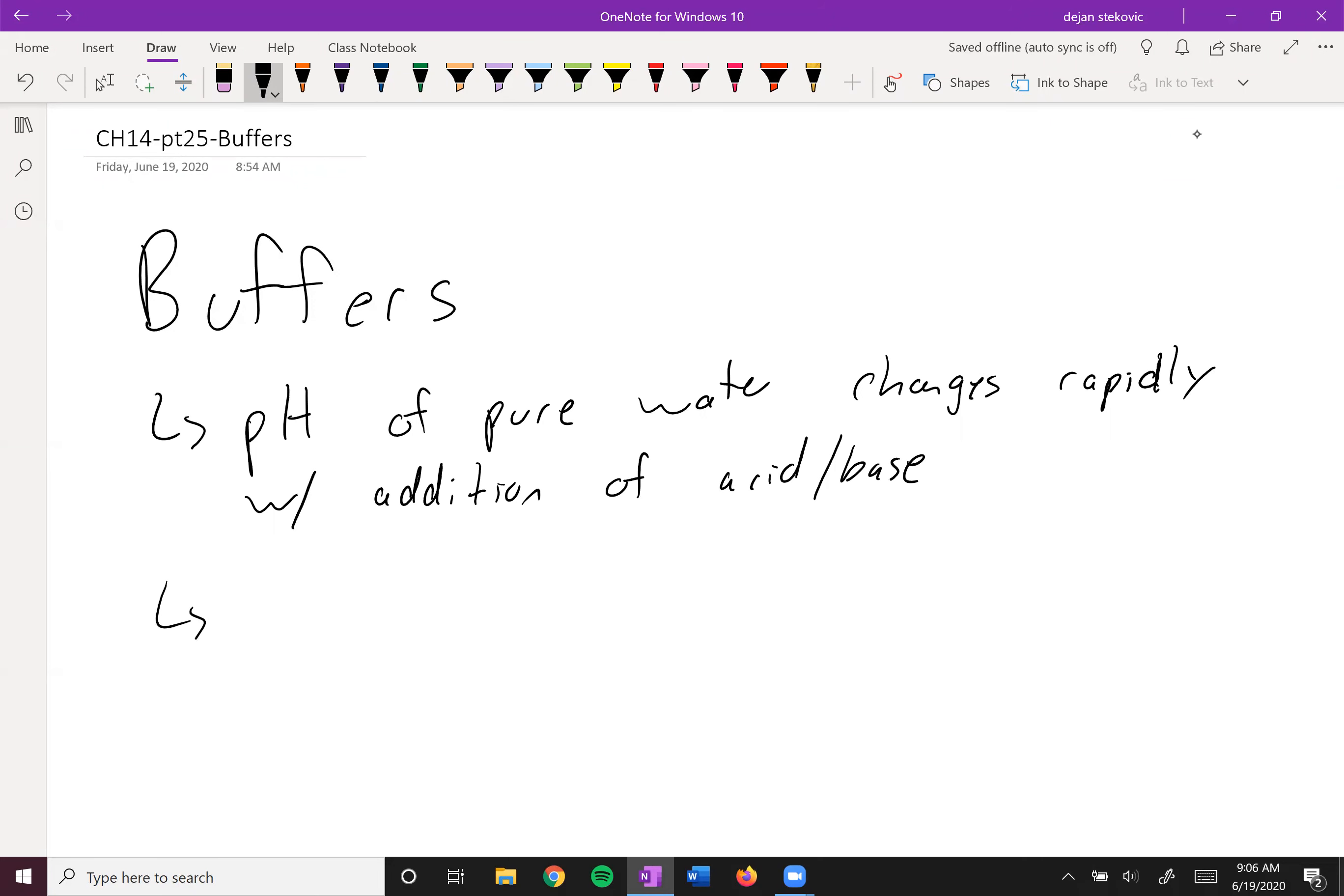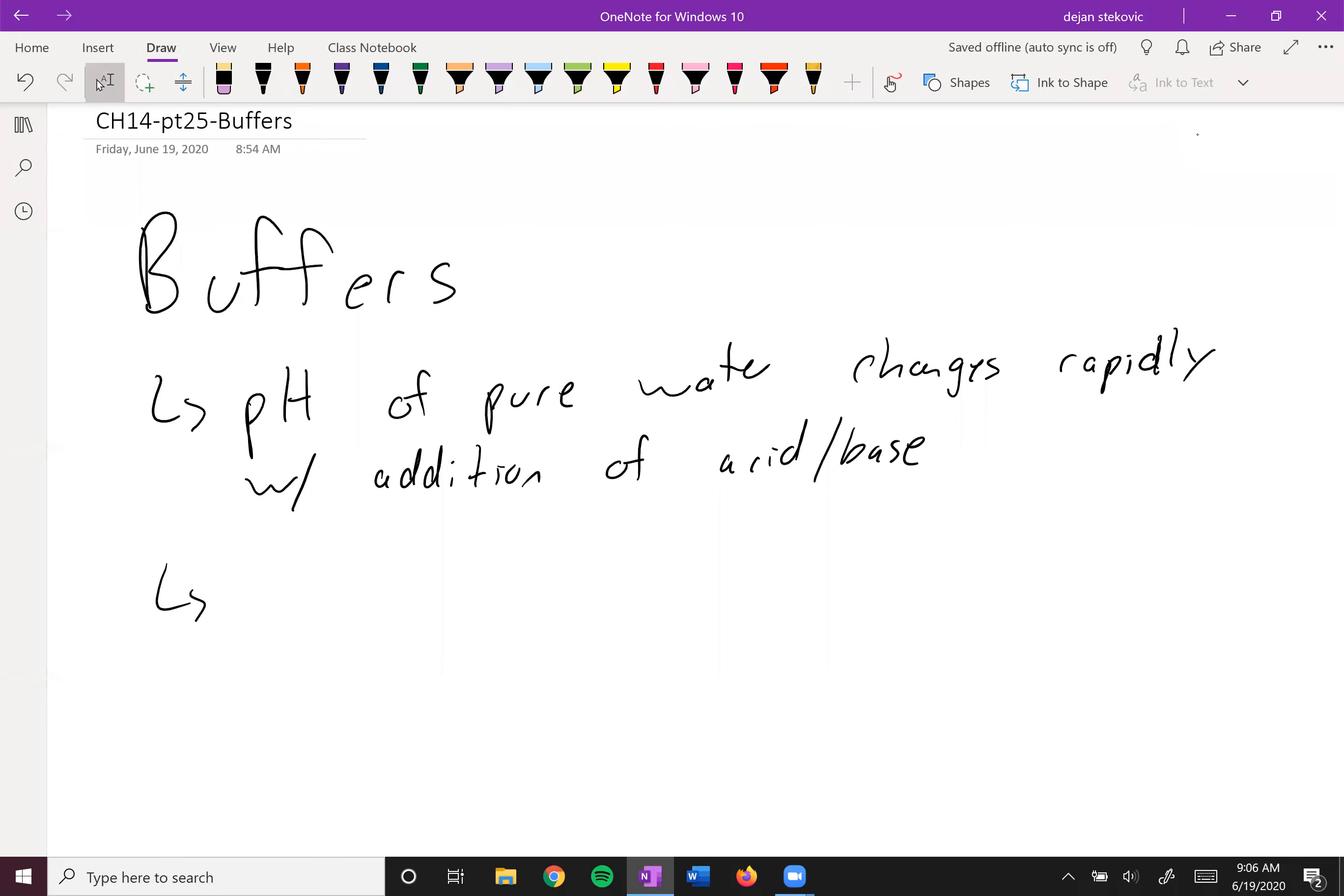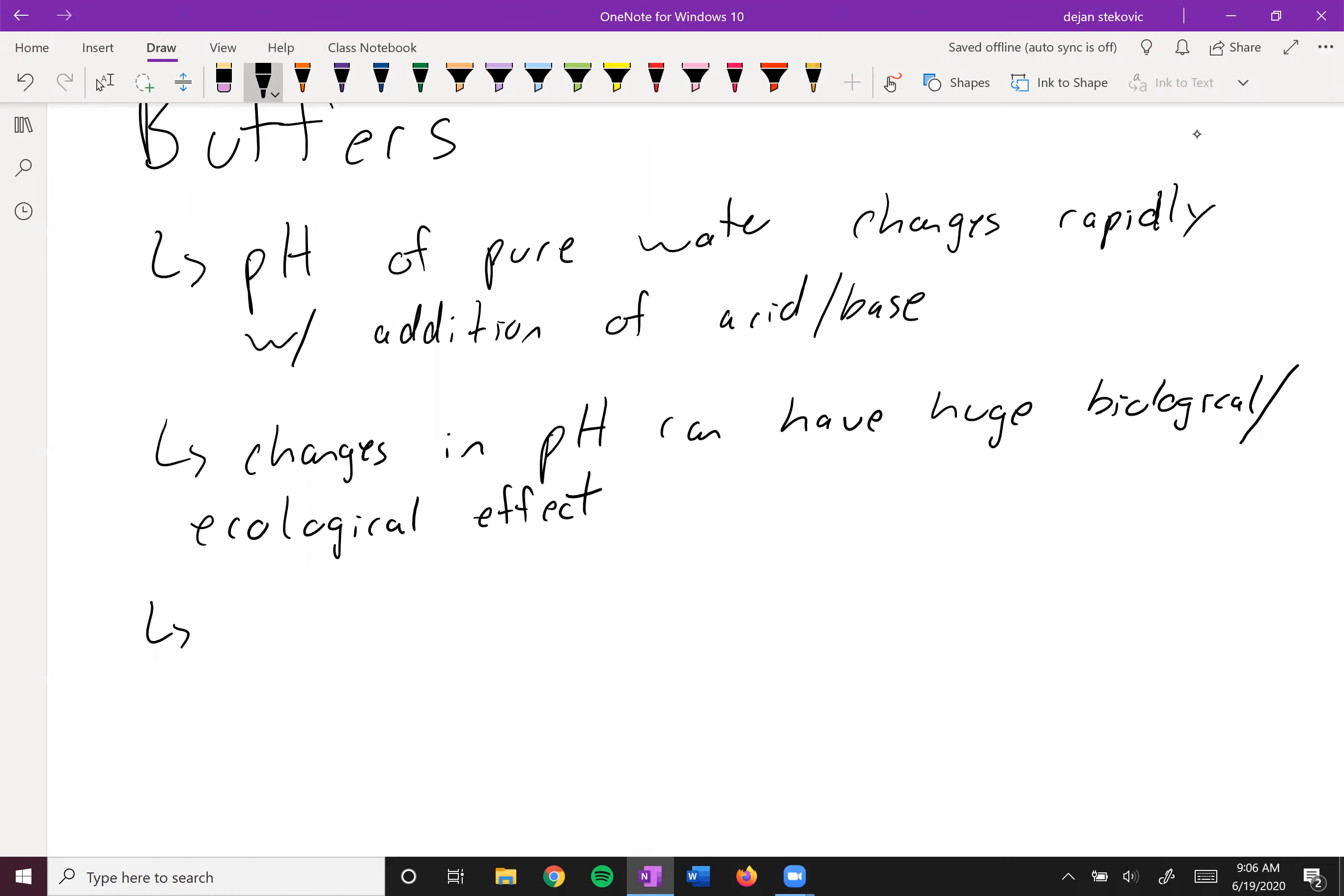However, a change of pH can have huge biological or ecological effects. Fish can only live in a certain pH range, your blood is a certain pH range. So if a little bit of acid or base is added into a lake, why don't all the fish die? If you work out, you're gonna produce some lactic acid - why doesn't that lactic acid change the pH of your blood and you die? The reason this doesn't happen is that most systems are buffered. Most biological